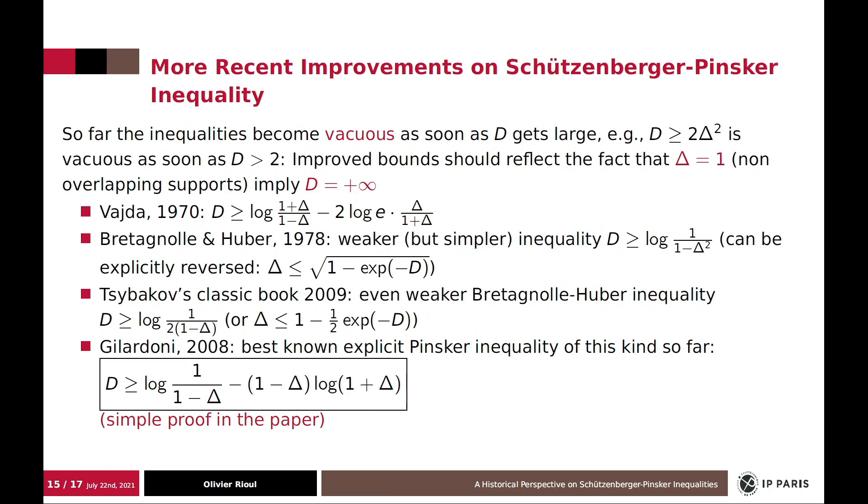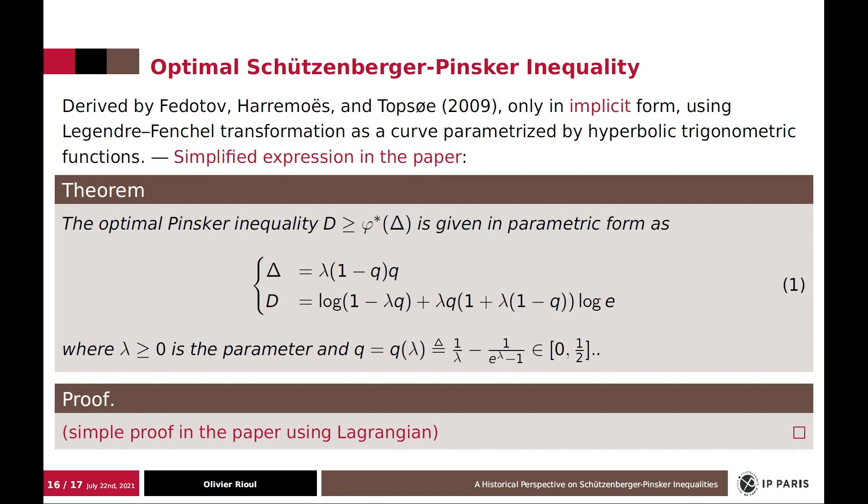But now the story is not over yet, because we have the optimal. However, the optimal was derived in an implicit form and not explicit. So a parameterized form. This was derived by Fedotov, Harremoës, and Topsøe by Legendre-Fenchel transformation and with hyperbolic trigonometric functions.